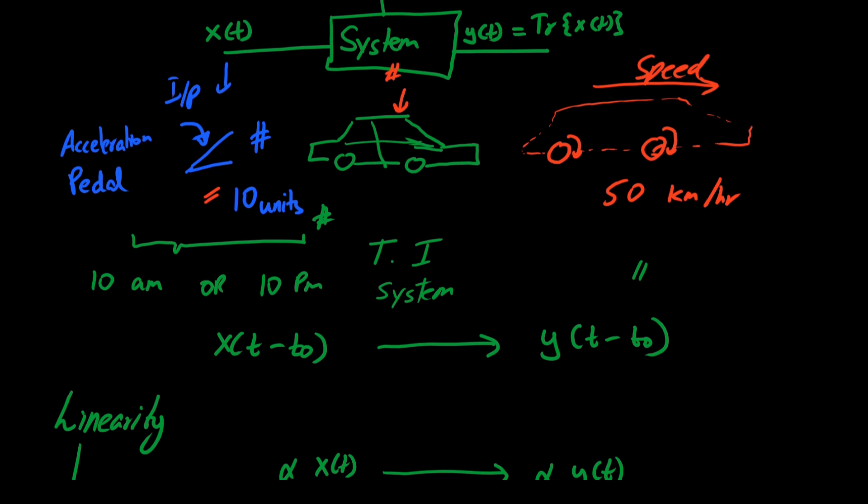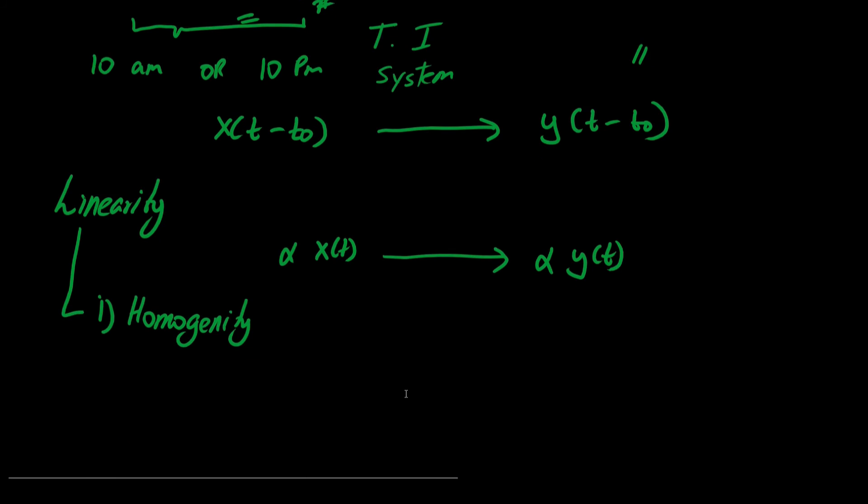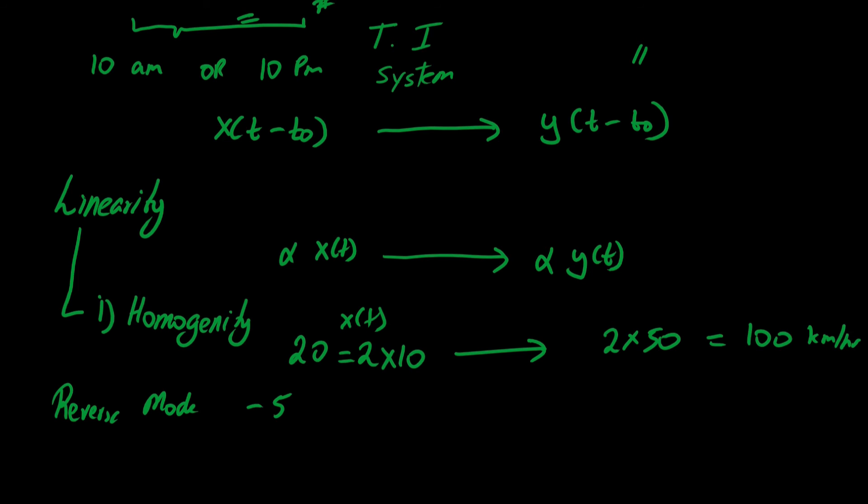That is, in this vehicle, previously we applied 10 units. So now if we apply 20 units, which is 2 times the initial concentration of 10 as an input, the output would be 2 times 50, that is 100 km per hour. Or maybe we can switch the gear to reverse mode and then apply a force of 5 units. That is now we have minus 5 units. So this would relate to 10 multiplied by minus 1/2.